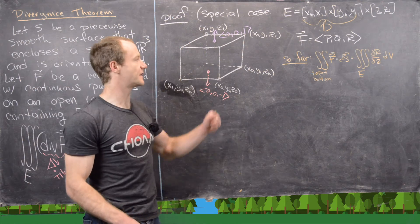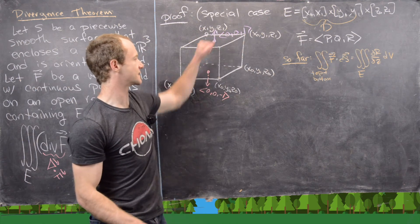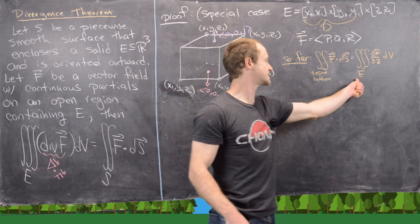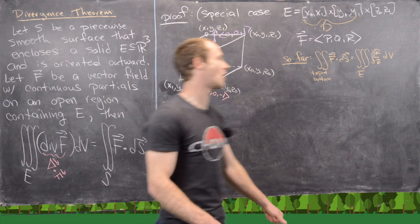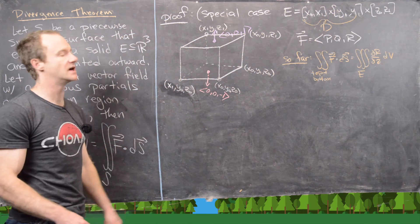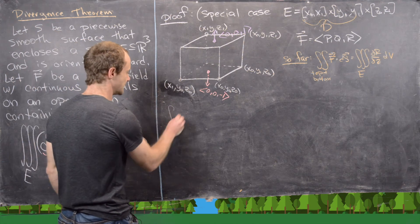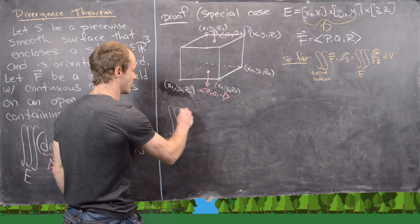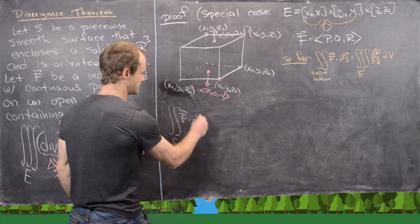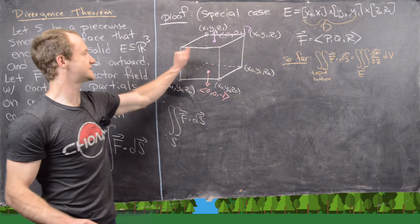So far we showed that the surface integral of the vector field over the top part and the bottom part turns into this triple integral of ∂r/∂z where r is the third component of our vector field. Now what we can do is just look at the surface integral over the whole thing, where S is the outside of this box.